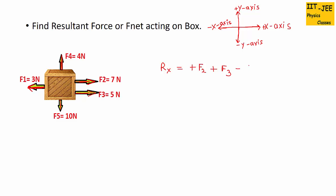So you will write it minus F1. So this is the equation. So it would be 7 plus 5 minus 3.